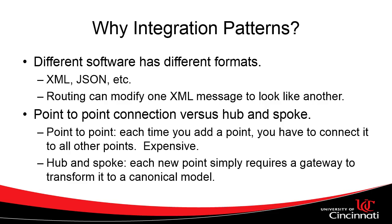Another thing to think about with routing is point-to-point connections versus hub-and-spoke. Point-to-point means every time you add a new piece of software, you have to connect it to every established piece of software — that's expensive because the number of connections grows in a big-O fashion. Hub-and-spoke means you take a proprietary format — maybe one you don't have control over because it's a vendor format — you take it through a translator with Camel, standardize it into what we call a canonical format, run it through a hub, and that hub can direct it wherever it needs to go. So you have one gateway going from proprietary to canonical, and then back from canonical to proprietary.